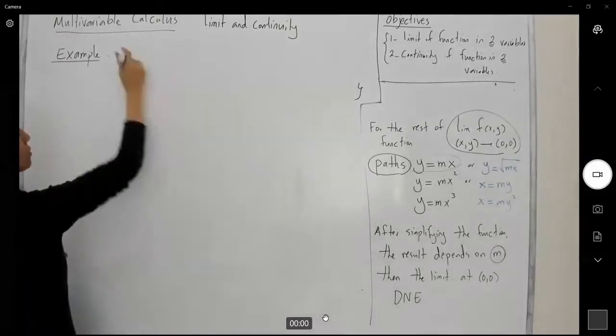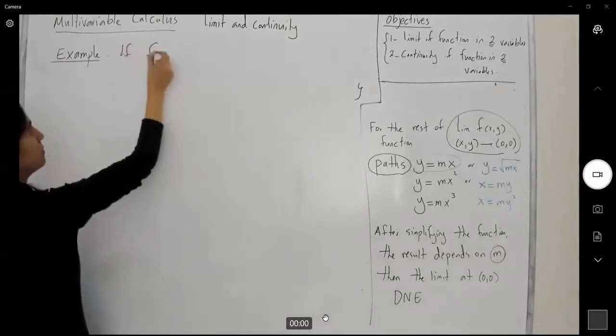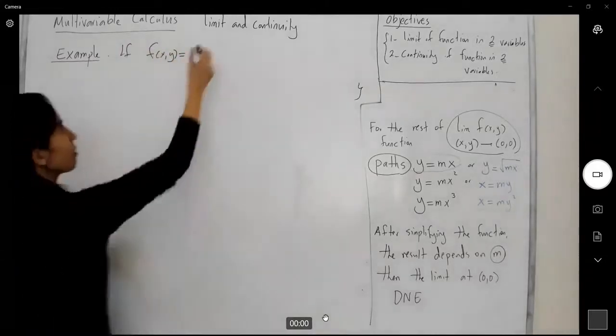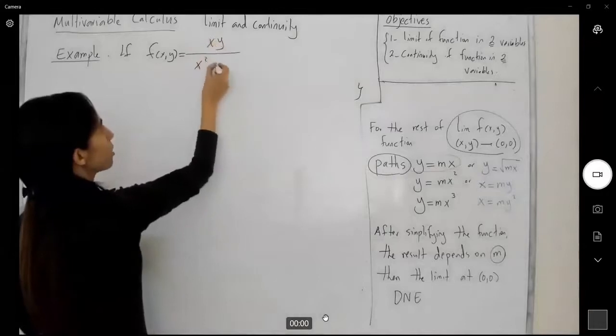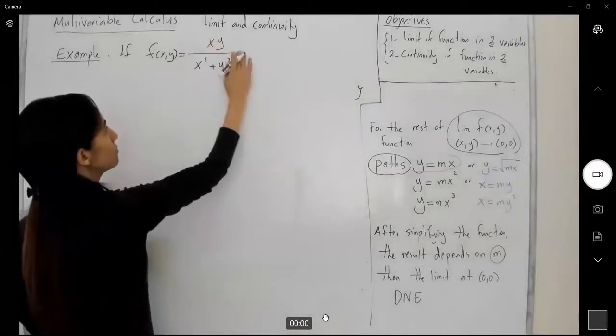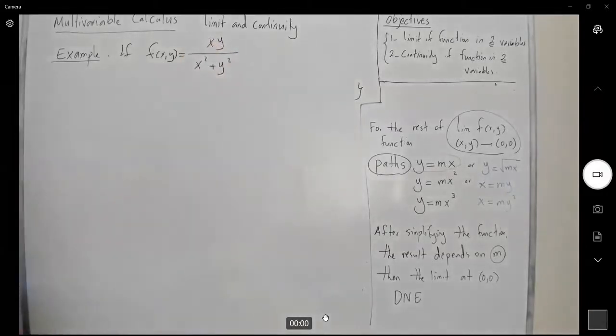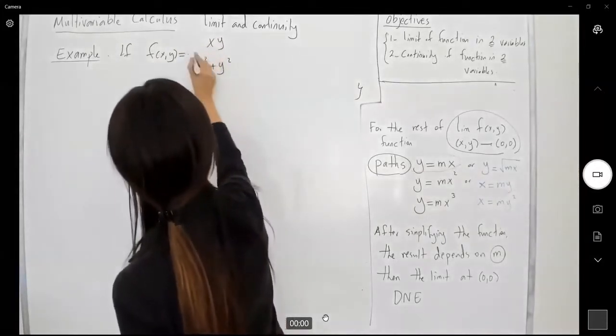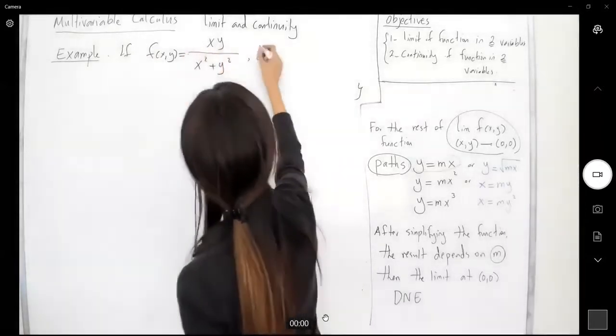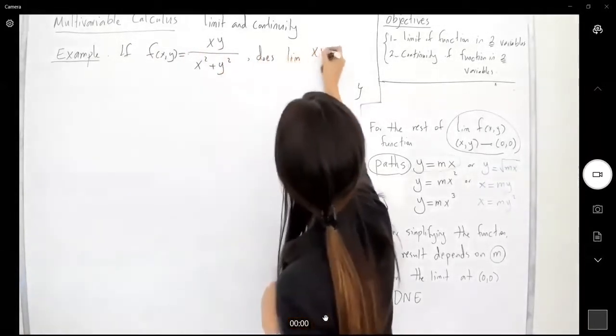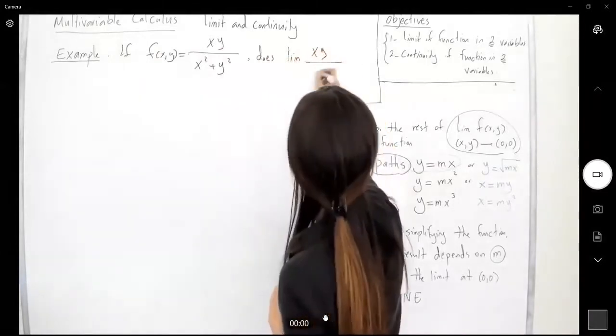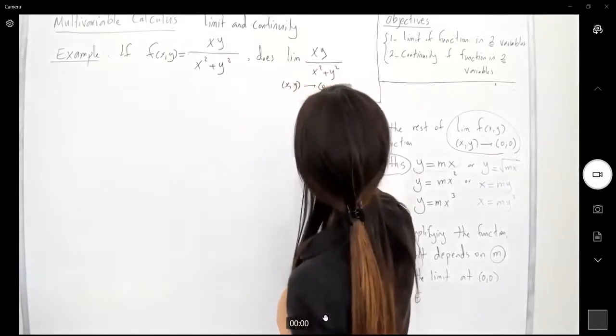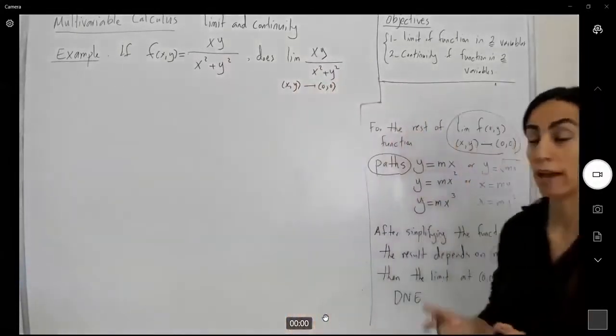If f(x,y) is equal to xy divided by x squared plus y squared, does the limit exist? Does the limit of xy over x squared plus y squared exist as x and y approach the origin?